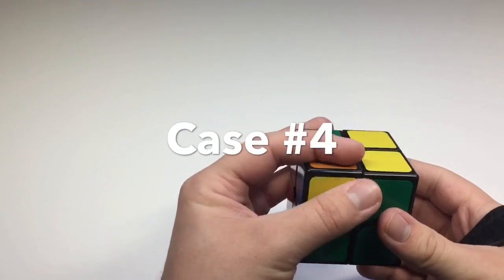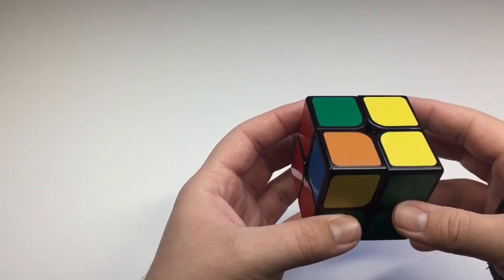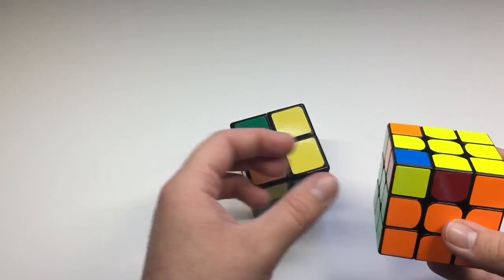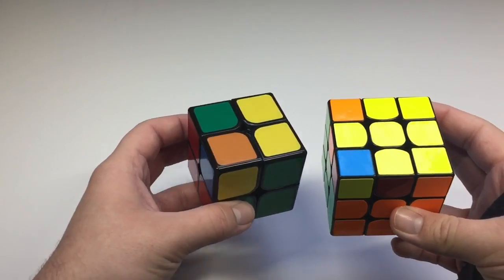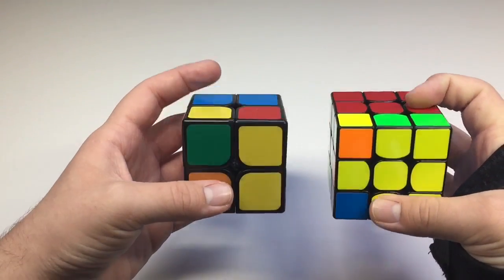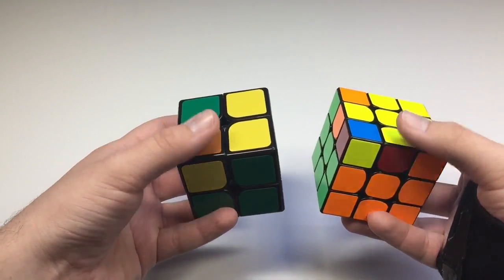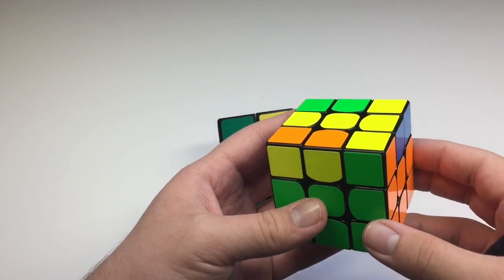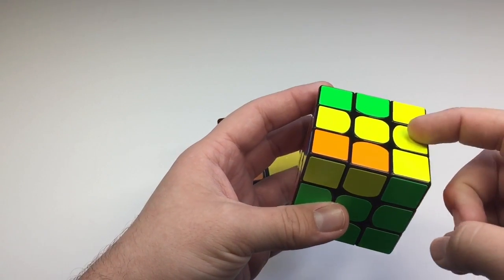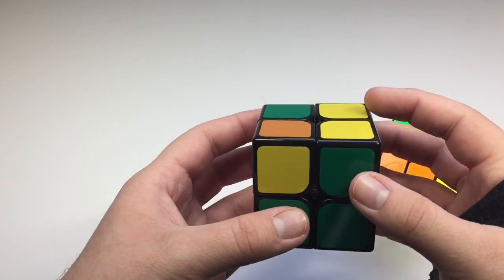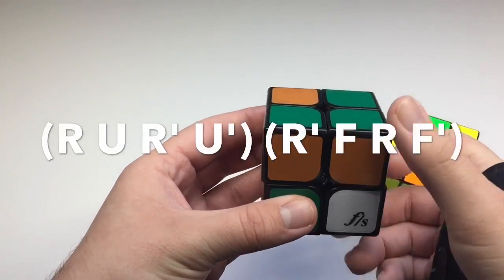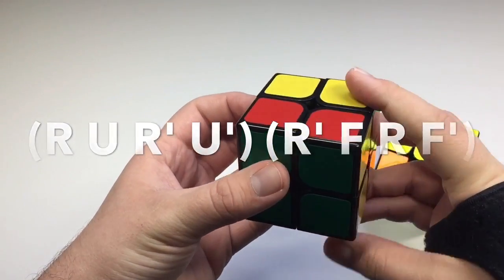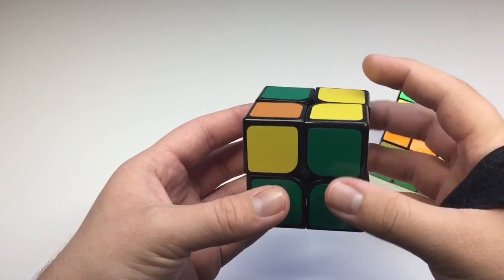The next case looks like this. Get the two yellow right here, one here, and one in the back. It would be the most similar to this case on the 3x3. But actually, it is the same algorithm as this OLL case. So I'll do it right here and perform fast.